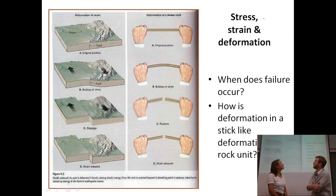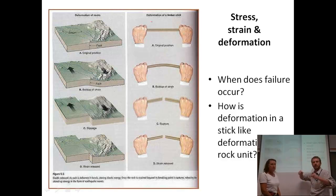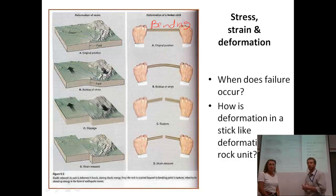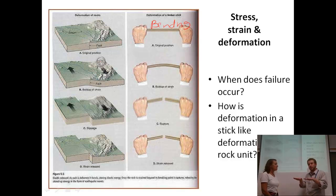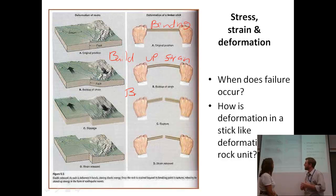On the far left, we've got a picture of a landscape, and then on the right it looks like they're comparing the landscape to someone bending a rod or a stick. The top position is actually the original position — how the land looks at the beginning. Then we start building up some strain, moving some of the rocks. For the third picture, it says slippage, and it looks like we broke the rock and it's moved side to side. And on the last one it says strain is released, so everything looks nice and calm.